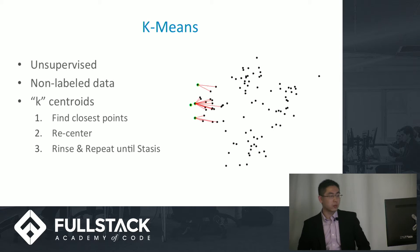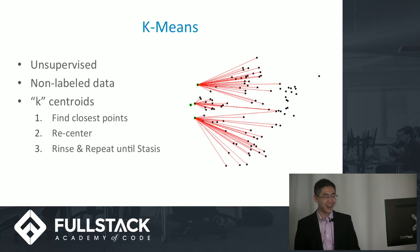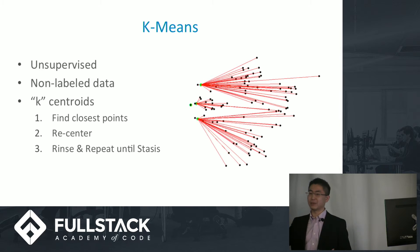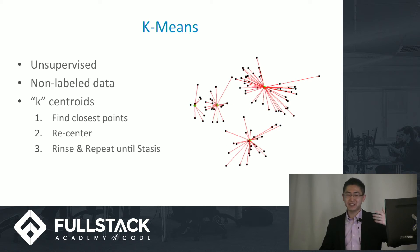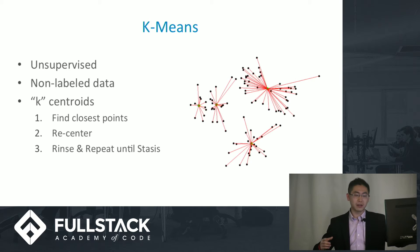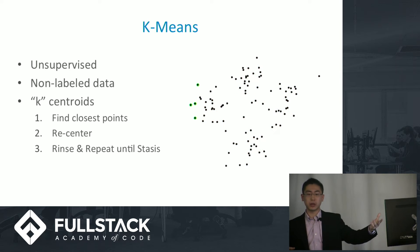K-means, on the other hand, this will be my unsupervised learning algorithm. So the idea is nothing's really labeled, as you can see. What I've done is essentially create four centroids, green points, and they start at a particular point and they find the closest points to it, the black points.